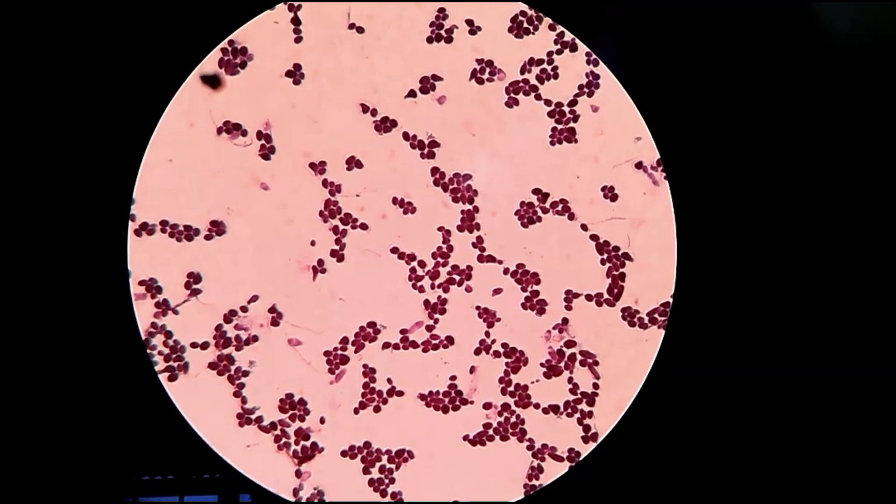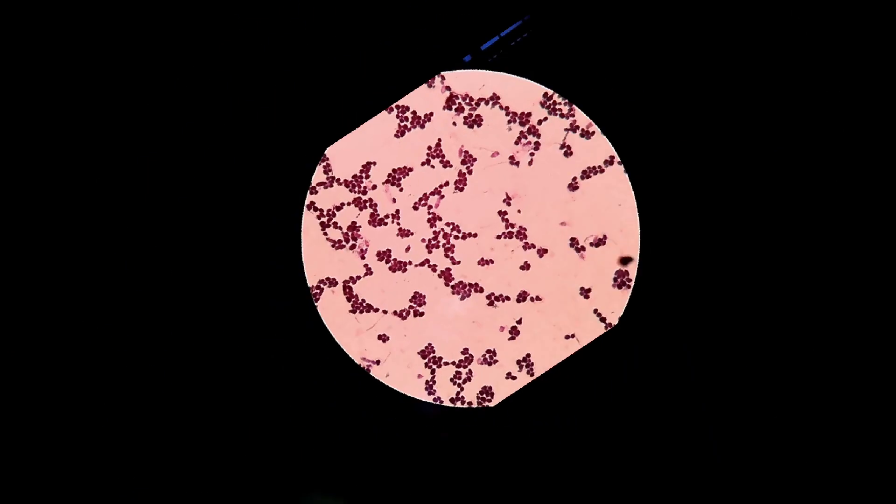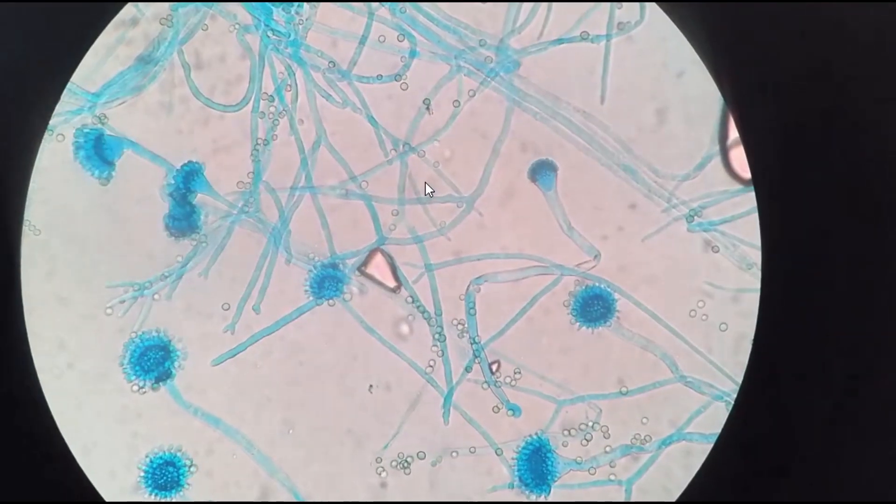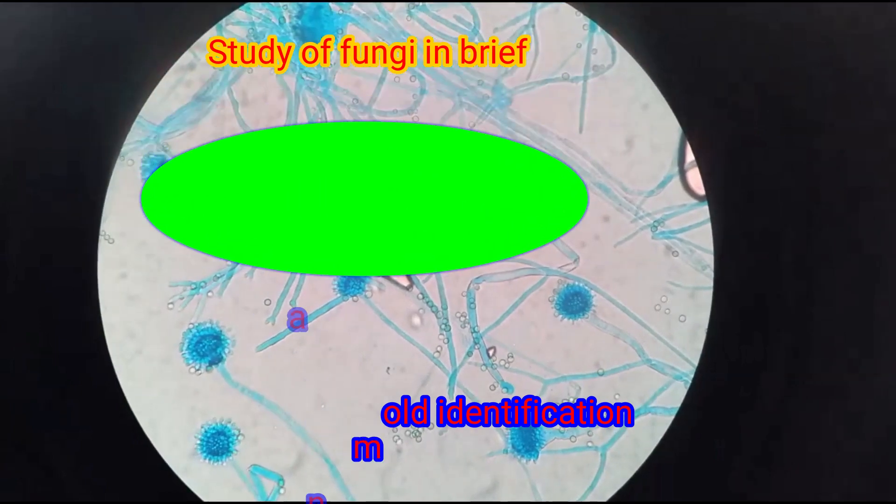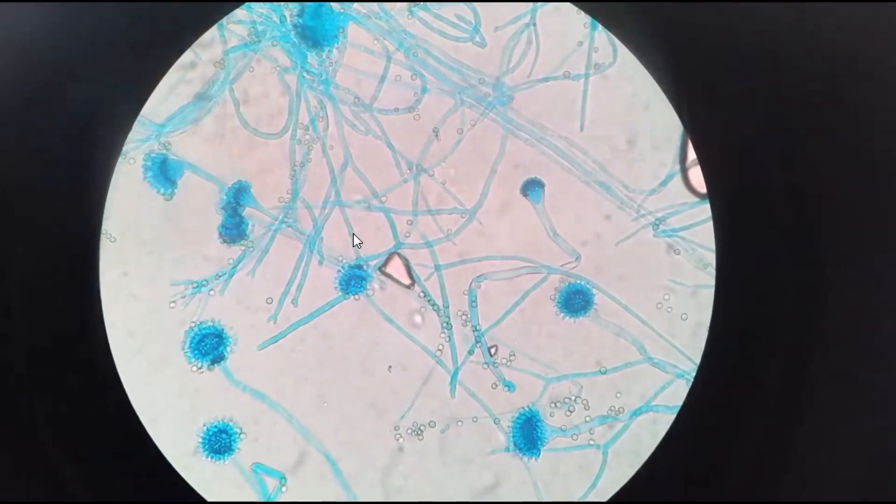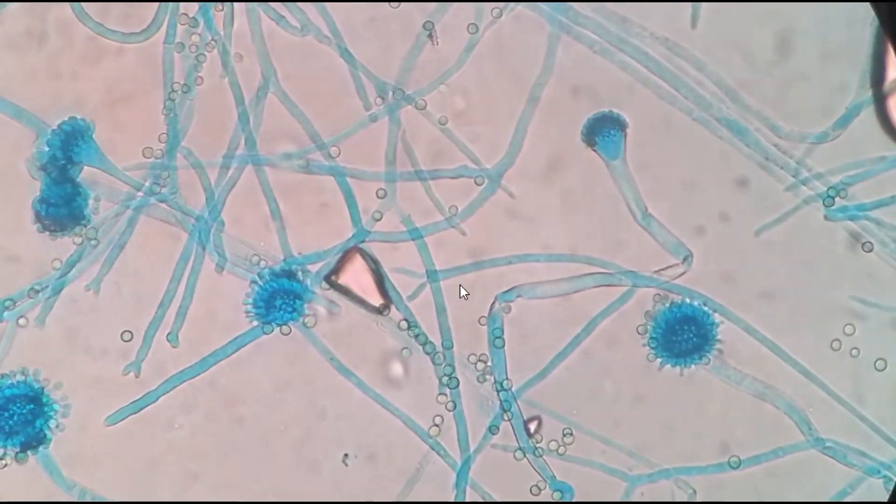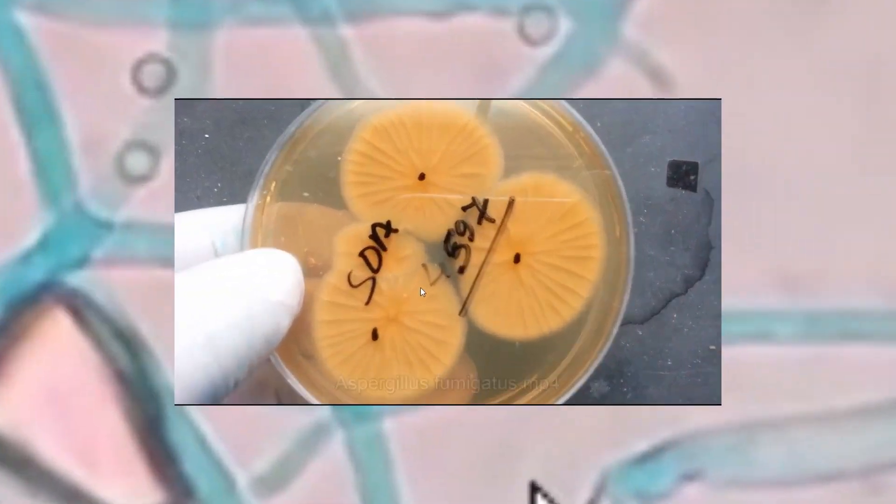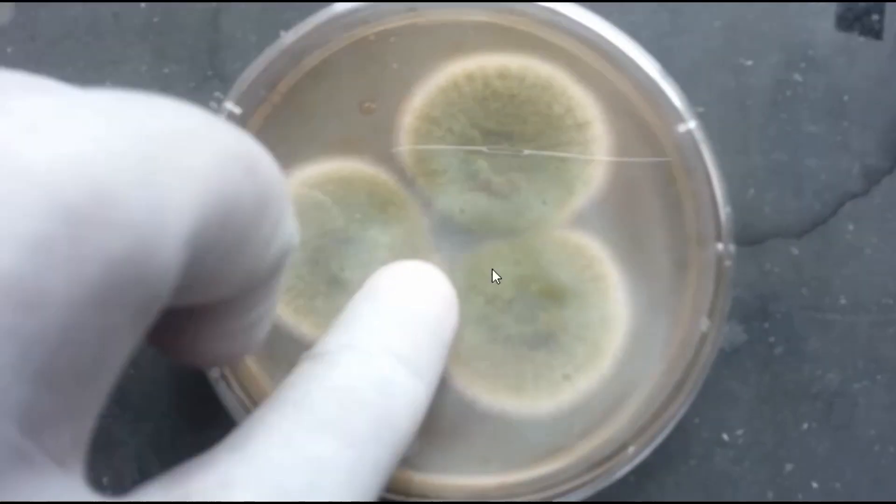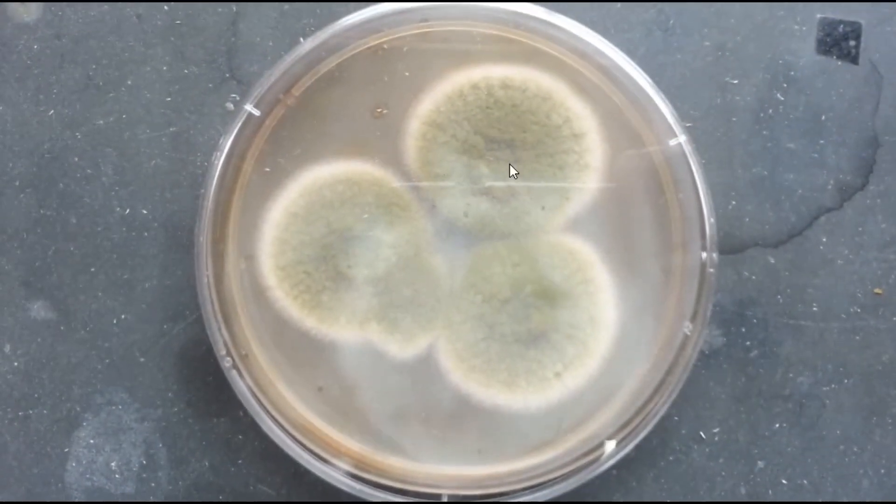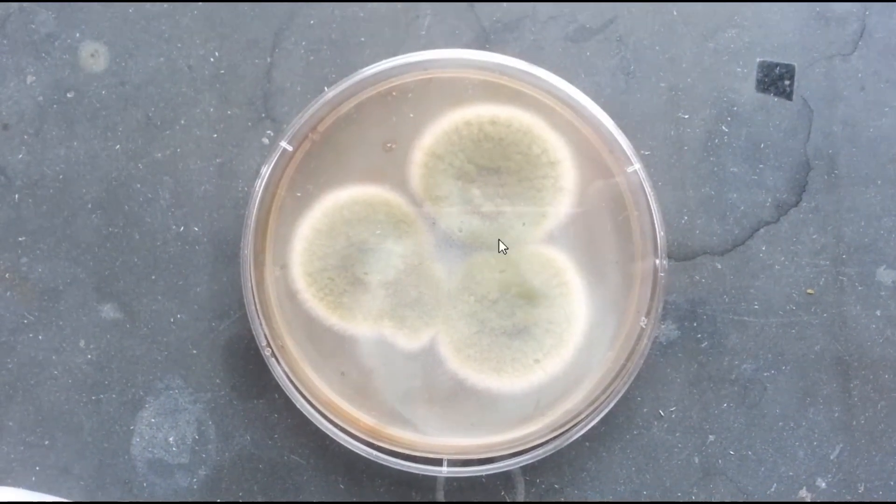to the molds. As you know, mold is filamentous and multicellular. Here you can see Aspergillus growth on Sabouraud dextrose